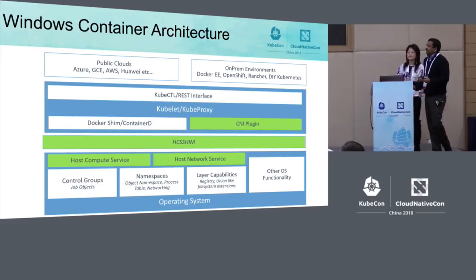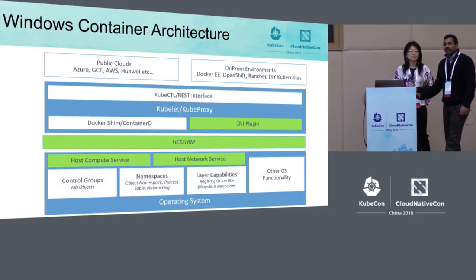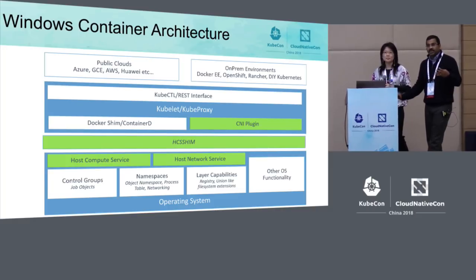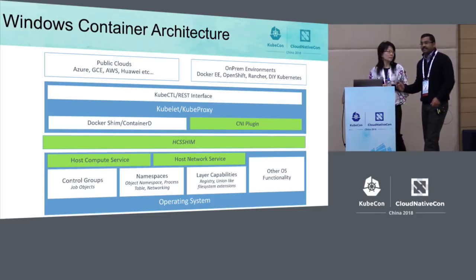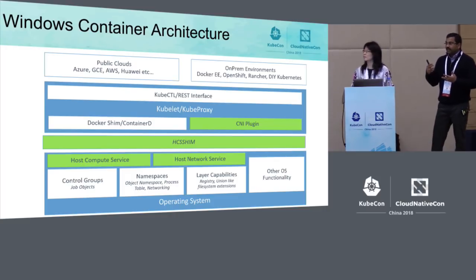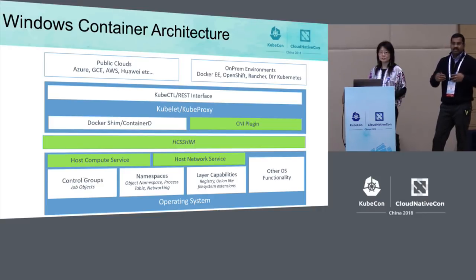The Windows operating system has two main inbox services: the Host Compute Service and Host Network Service, that provide the required container functionality. The Host Compute Service is responsible for compute-related functionality such as job object creation, management, and general lifecycle management of containers. The Host Network Service is responsible for network management, namespace management, endpoint management, network policy, and service load balancing. The HCS shim is a Go wrapper for both of these services, and Kubelet, KubeProxy, and different CNI plugins use this HCS shim to program HNS and HCS.